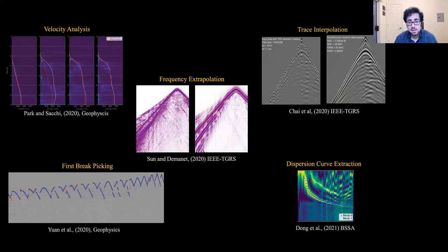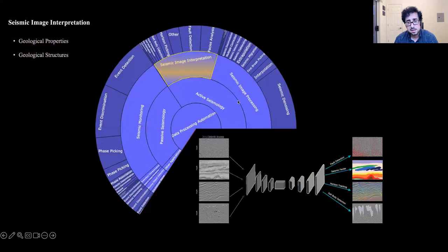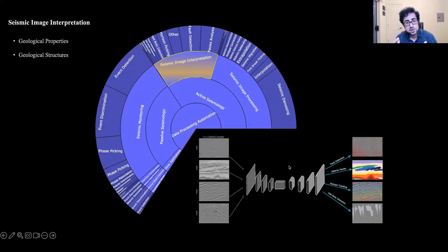Deep learning has also been shown to be an effective tool for a variety of other seismic image processing tasks such as velocity analysis, frequency extrapolation, and trace interpolation. After preprocessing, it is time to interpret or extract useful information about the geology or structure of the subsurface from these seismic images. This is basically a type of image understanding; hence, applications of popular deep neural networks from computer vision like CNNs are a natural choice.